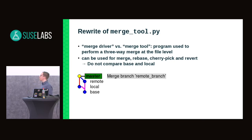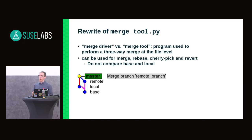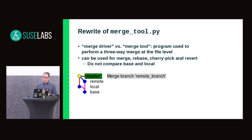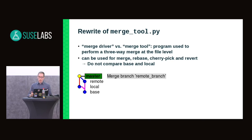In a typical merge example, we have a local branch and a remote branch, and we want to merge changes from the remote into the local. Git identifies a base commit — the most recent common ancestor — and once the merge is done, a new commit is created. The merge tool is used for Git merge operations, but I was surprised to learn that merge tools are also used for rebase, cherry-pick, and revert — all operations that involve merging multiple versions of the same file together.